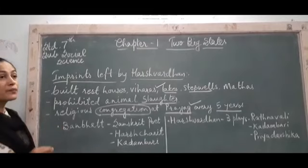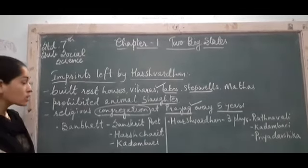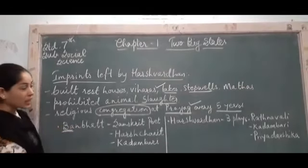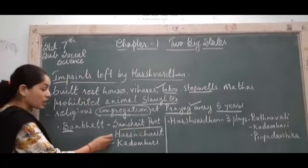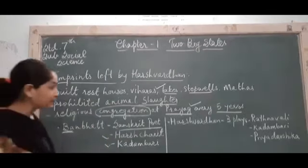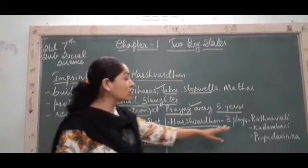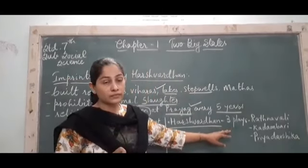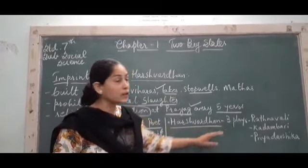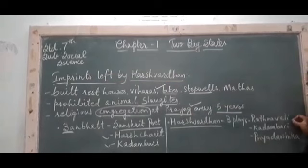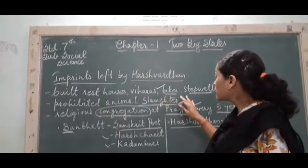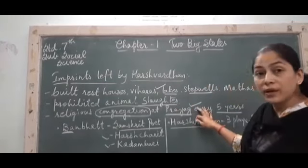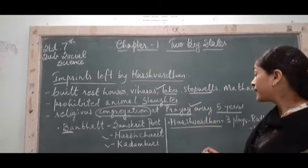In his kingdom, a Sanskrit scholar named Banabhatta was adorned at his court. Banabhatta was a Sanskrit poet who wrote two books: Harshacharita and Kadambari. Harshvardhan himself was also a good writer and he wrote three plays — Ratnavali, Kadambari, and Priyadarshika. He was caring about his subjects, a great donor, loved charity, and was also a patron of scholars.